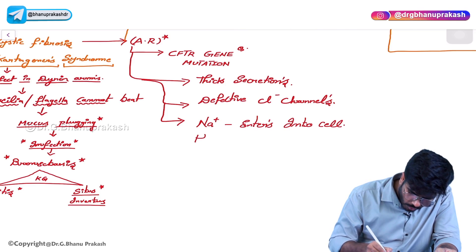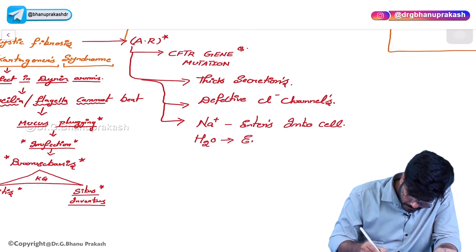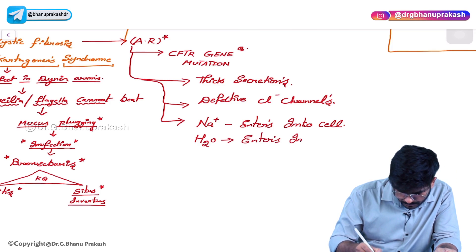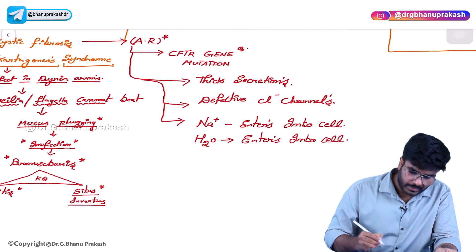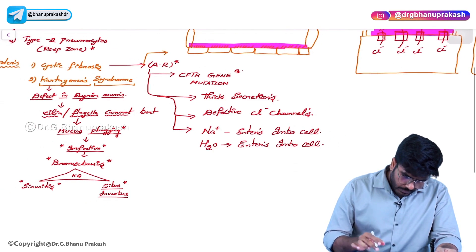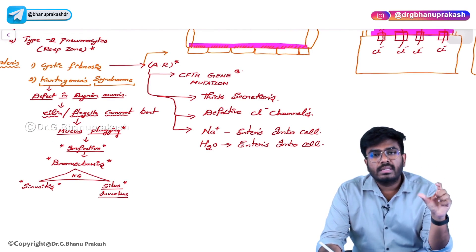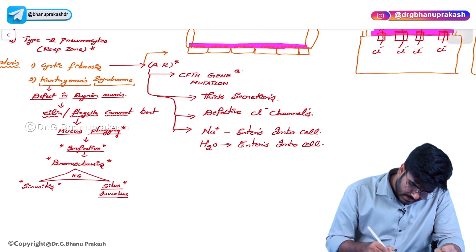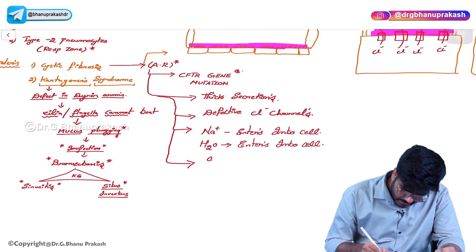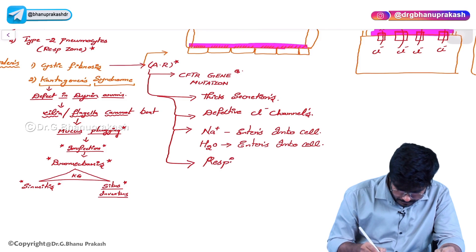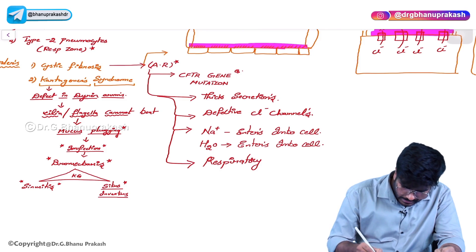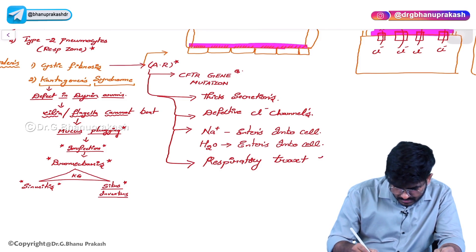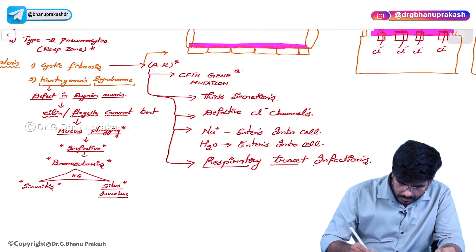Sodium enters and water also enters into the cell. This causes mucus plugging in the bronchus, and that will cause infections. So in cystic fibrosis, the patient is going to have respiratory tract infections.